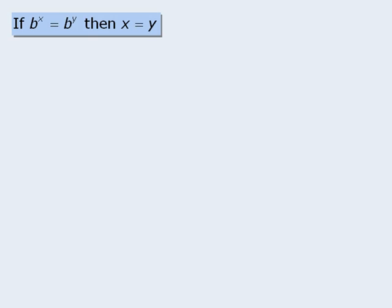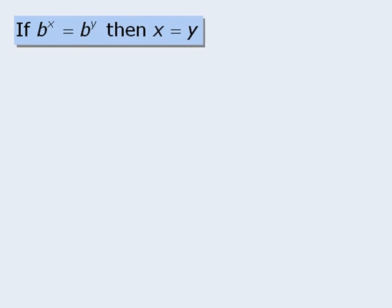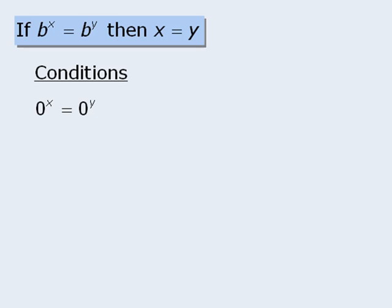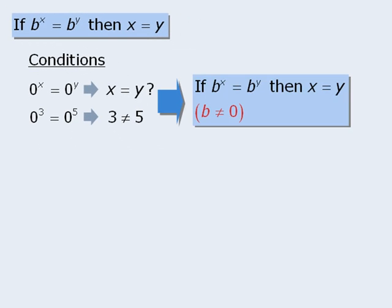Before we conclude, it should be noted that this rule isn't completely accurate, since there are some conditions where it is not true. For example, if 0 to the power of x equals 0 to the power of y, can we conclude that x equals y? The answer is no. We know that 0 to the power of 3 equals 0 to the power of 5, but 3 does not equal 5. So for our rule to work, we need the condition that the base does not equal 0.